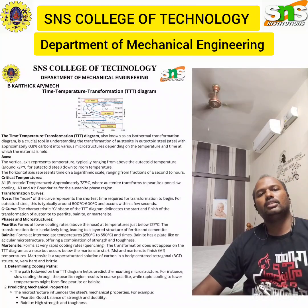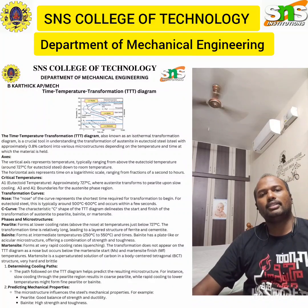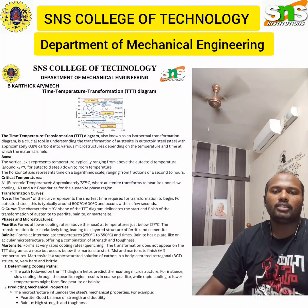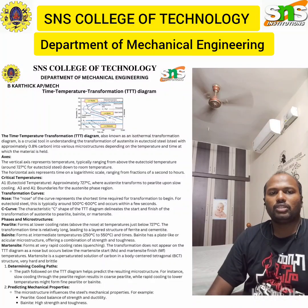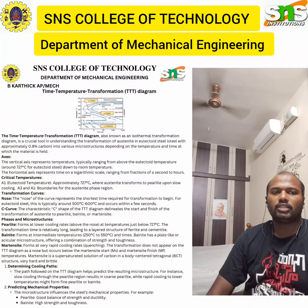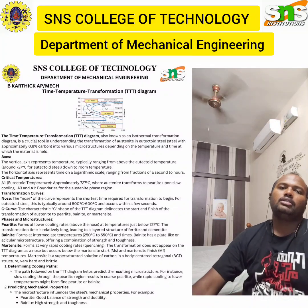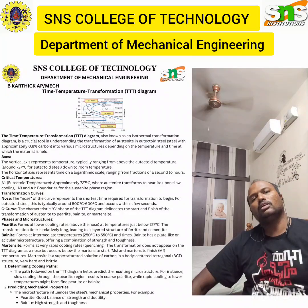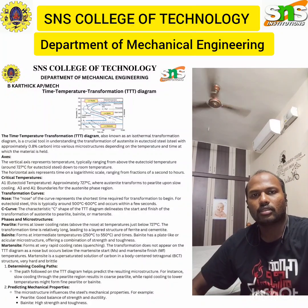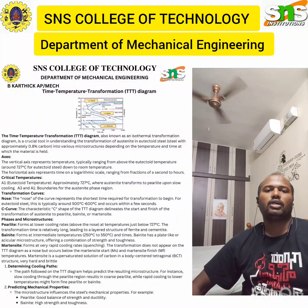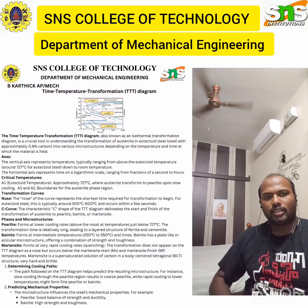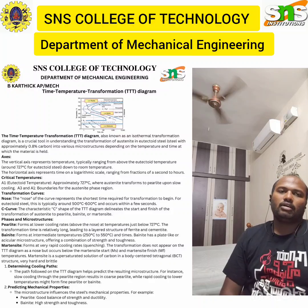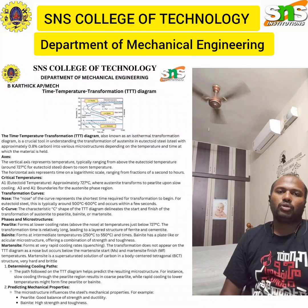Here you can see in this TTT diagram the axes. The vertical axis represents temperature, typically ranging from the eutectoid temperature of around 727°C down to room temperature. The horizontal axis represents time on a logarithmic scale, ranging from a fraction of a second to seconds. The critical temperature A1 is the eutectoid temperature, approximately 727°C, where austenite transforms to pearlite upon cooling.